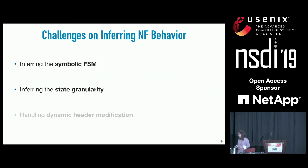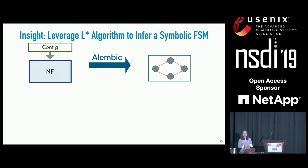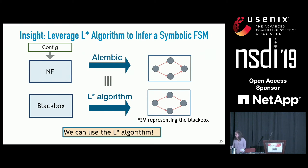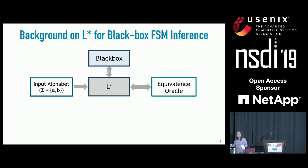Recall that we want to output an FSM for the NF given a configuration. There is a classical algorithm in learning theory called the L* (L-star) algorithm that, given a black-box system, outputs an FSM representation of that black box. We can leverage L* as a starting point to infer the FSM. L* takes an input alphabet—a set of input symbols the black box accepts—in our case, packets.